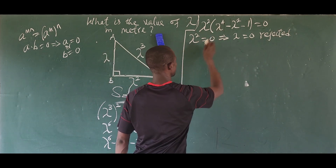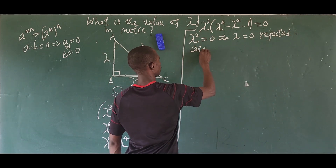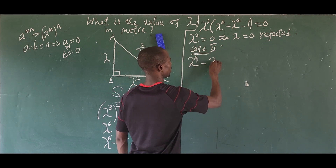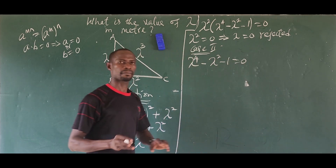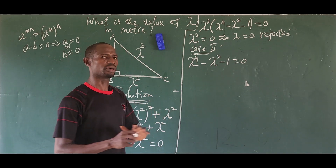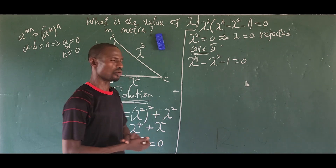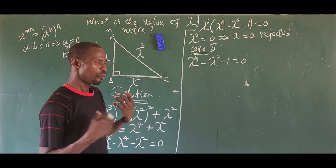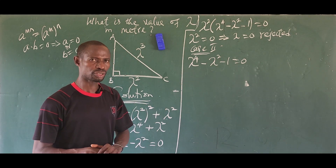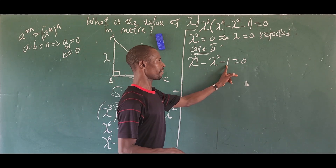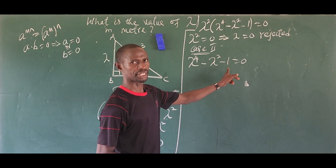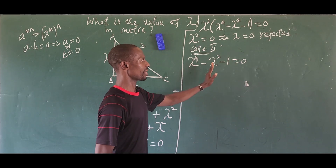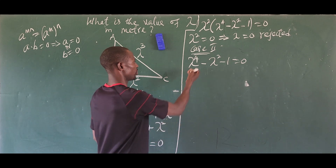We take the second case: lambda to the power of four minus lambda squared minus one equals zero. This is a fourth-degree polynomial equation, so we look for four roots. However, we can simplify by rewriting and using substitution — we can also solve it using two different methods by splitting and grouping, but the substitution method is the easiest step.